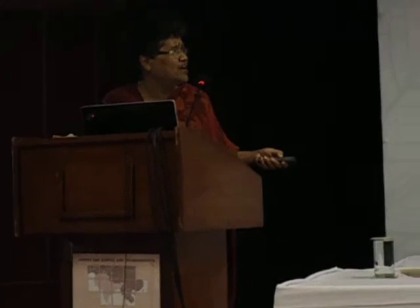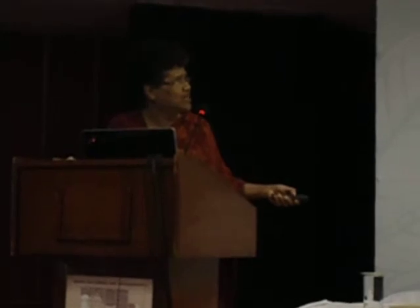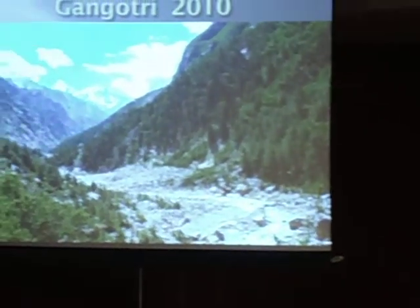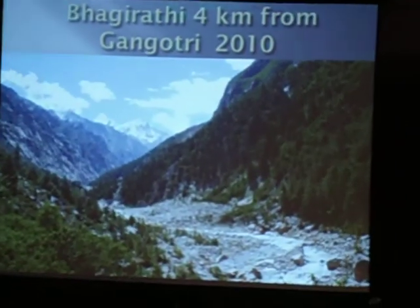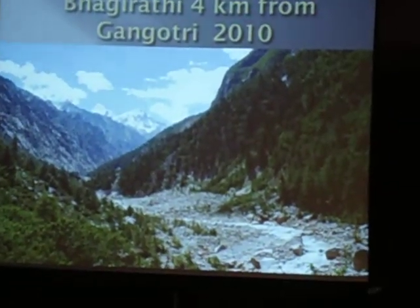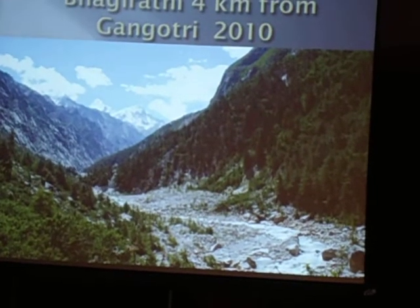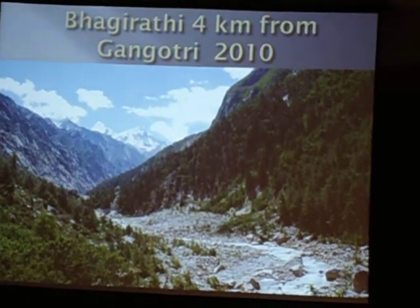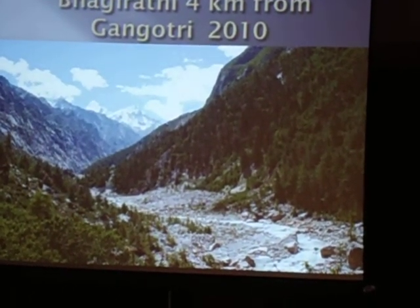This was 1866 — Samuel Burn took the picture. This is the Bhavirati river, this is Telu peak, and one is Sudarshan peak. Today it looks like this — this is Telu, this is Sudarshan and Gangotri, and the Bhavirati river is flowing like this. Now there are a few more trees. Earlier, in 1866, Samuel Burn went in November-December, whereas we went in June-July.